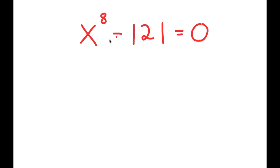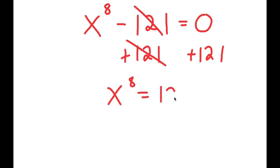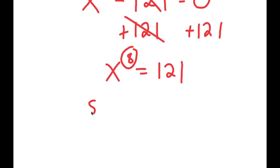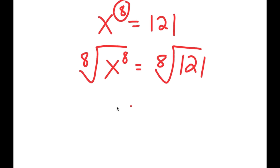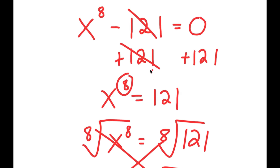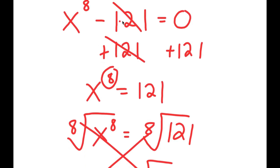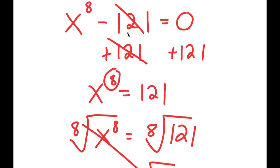Alright, so in this video I'm going to teach you guys how to solve this exponential equation. We have X to the power of eight minus 121 is equal to zero. Now what most people would think to do is add 121 on both sides, getting X to the power of eight equals 121, and then take the eighth root on both sides to get the eighth root of 121. But this method is actually wrong because there are actually many more solutions than just two to this equation, so we want to find all of these solutions.